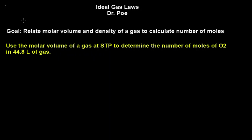More ideal gas laws. We're going to relate the molar volume and density of gas to calculate number of moles. Sometimes we'll be given density in grams per milliliter or grams per liter, and molar volume, the definition of that, is 22.4 liters for every mole of any gas. O2 gas, neon, helium, doesn't matter, any gas.